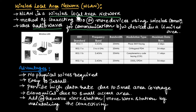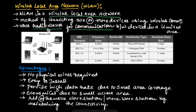WLAN is a wireless local area network that provides local area network connectivity using wireless communication. The method of connecting two or more devices using wireless communication is known as a wireless local area network. It uses radio waves for communication between devices in a limited area, providing wireless communication within a restricted range.